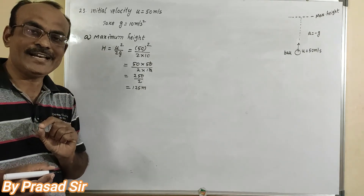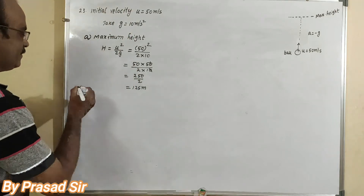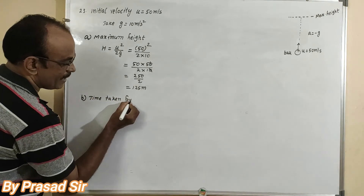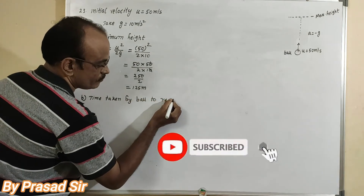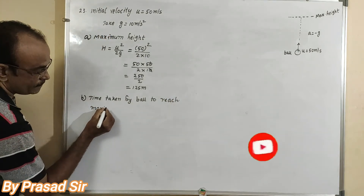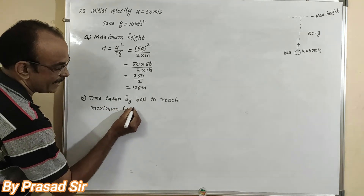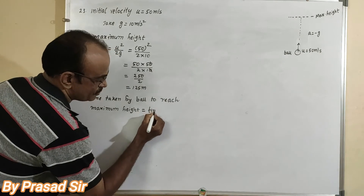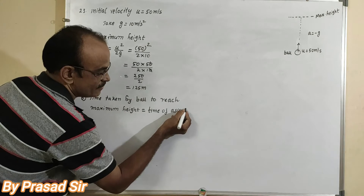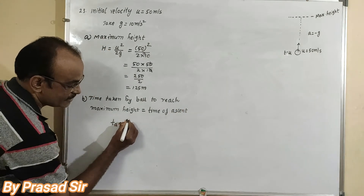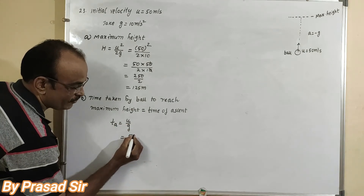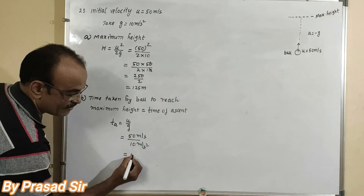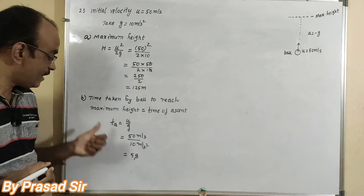Next, part B: the time taken to reach the maximum height. The time taken by the ball to reach the maximum height is called the time of ascent. Time of ascent Ta is equal to u divided by g. Here u is 50 meters per second and g is 10 meters per second square. So Ta equals 50 divided by 10, giving 5 seconds as the answer for B.